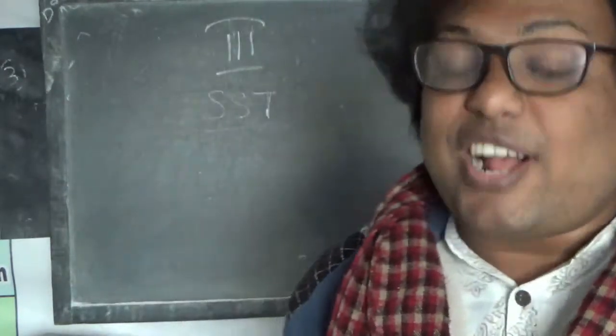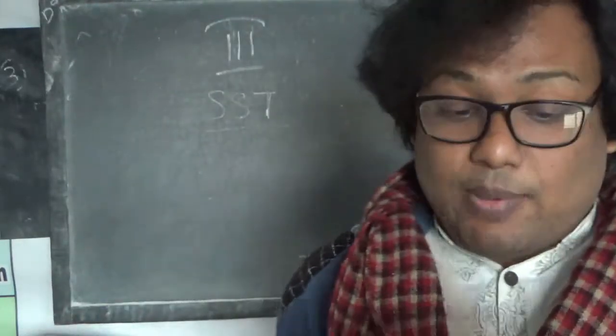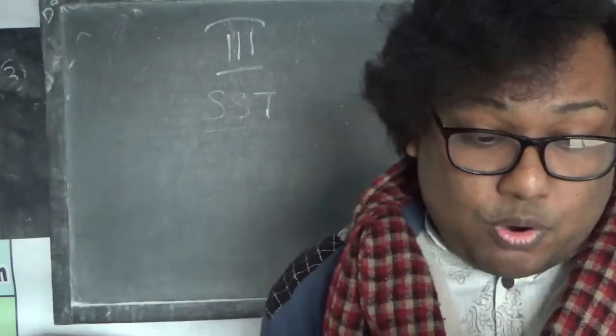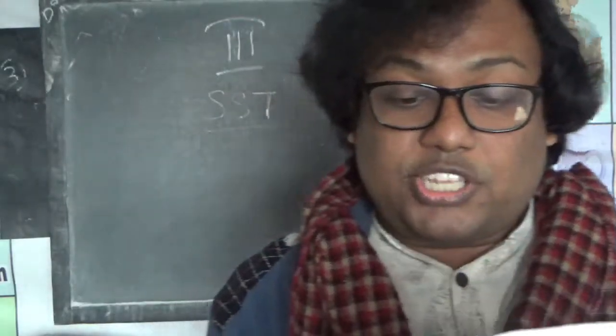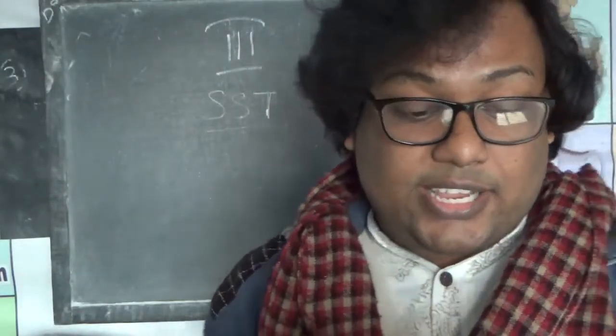Next chapter is Transport and Communication. Answer the following questions in brief. Number 1: Name the different means of transport. Land transport: car, bus, train, etc. Water transport: boats, ships, etc. Air transport: airplane, helicopter, etc.